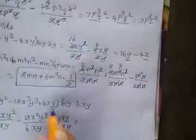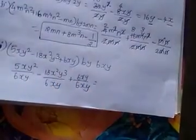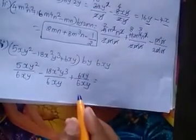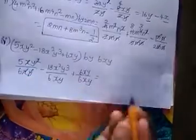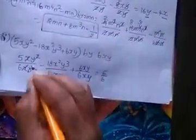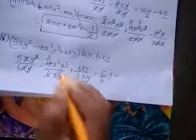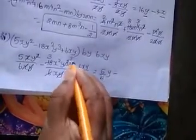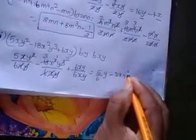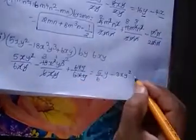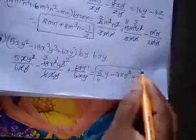Next, divide by 2m. So 5x squared minus 18x squared y cubed plus 6xy divided by 6xy. xy cancel, y cancel, y cancel, x cancel — so 5 by 6 remains, 5 by 6 y. This is the answer.